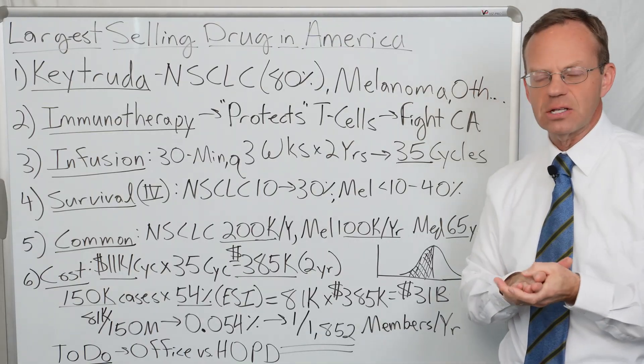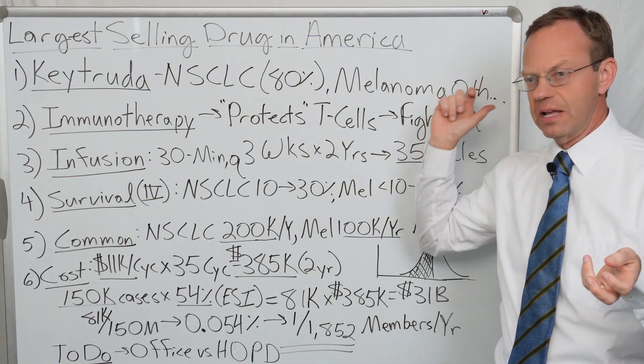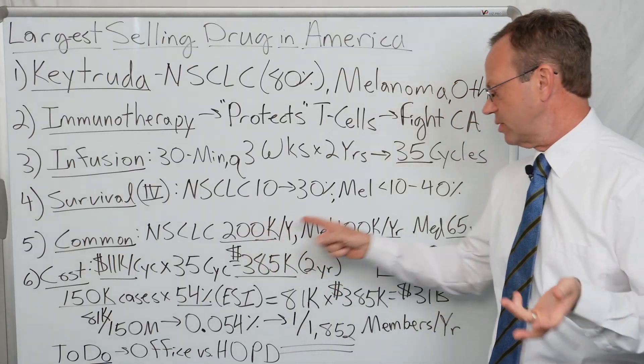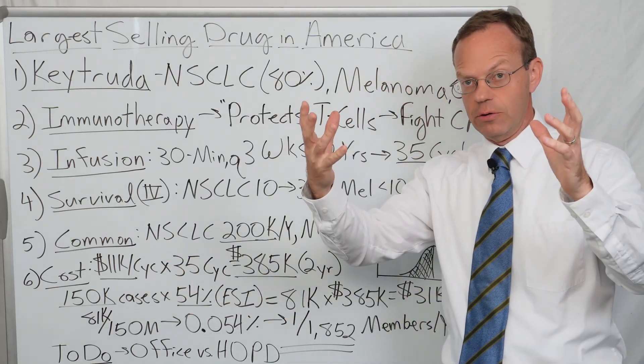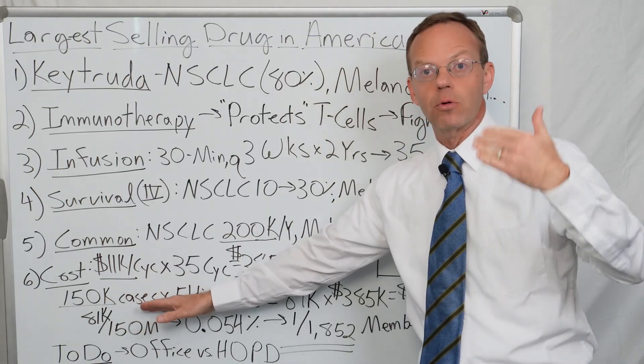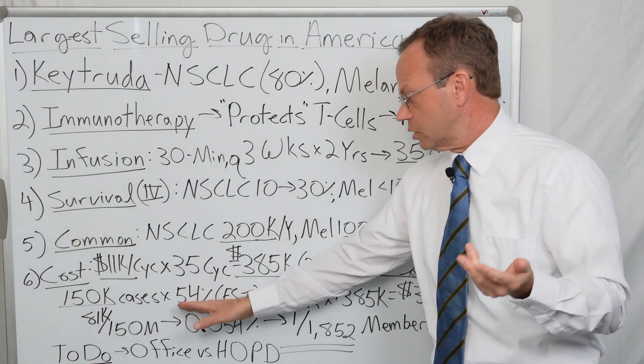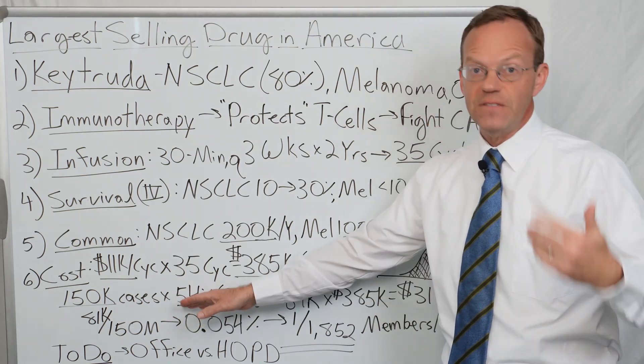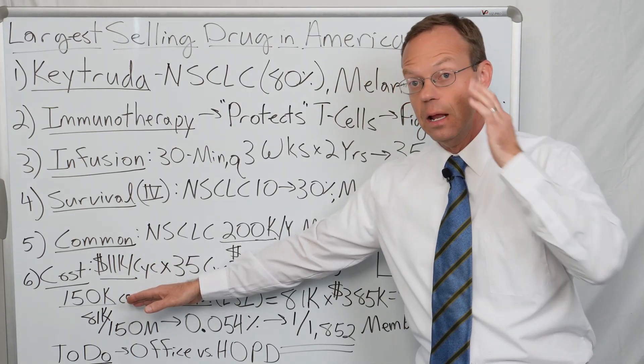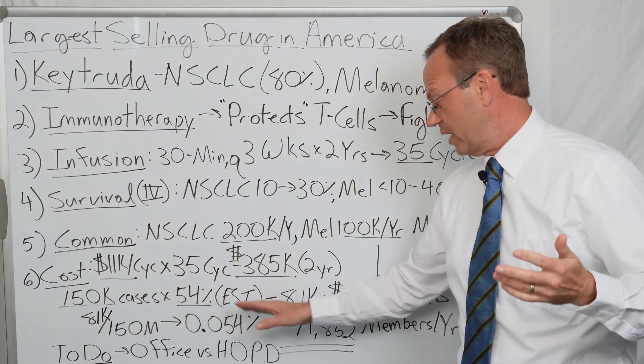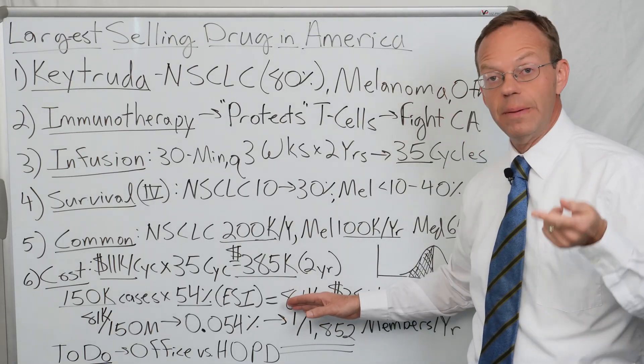That begs the question about how common are these cases for employer sponsored plans. If you add 100,000 plus 200,000, that's 300,000 total, but only half are under 65. Take 300,000 divide by two, that's 150,000 cases for people under age 65. Those people are on employer sponsored health plans, Medicaid, or have no insurance. About 54% of people under 65 are on employer sponsored plans, so 150,000 times 54% means about 81,000 cases per year are on employer sponsored plans.